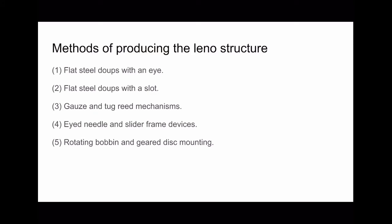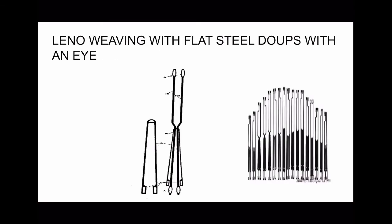As discussed in the previous video, there are five methods of producing leno structures: first, flat loop with an eye; second, flat steel loop with a slot; third, goes and tug reed mechanism; fourth, eye needle and slider frame devices; fifth, rotating bobbin and gear dismounting. In this video we'll discuss only about the first method — the flat steel loop with an eye.